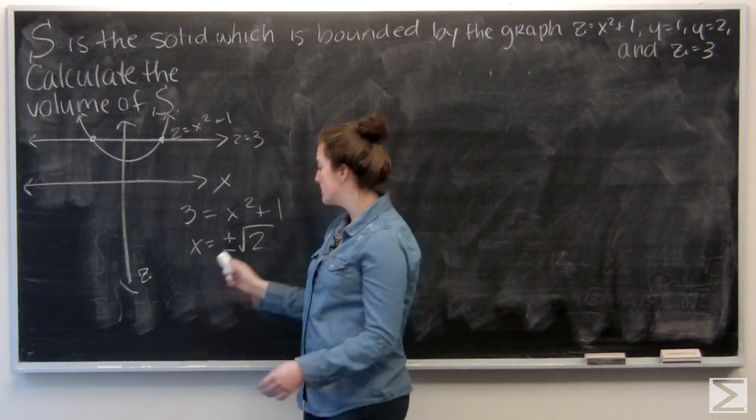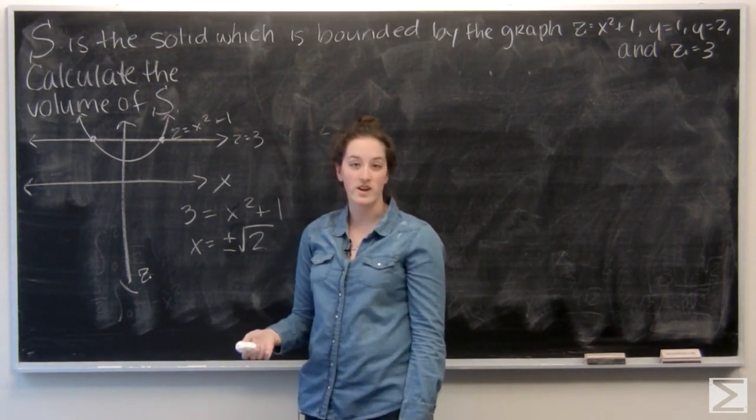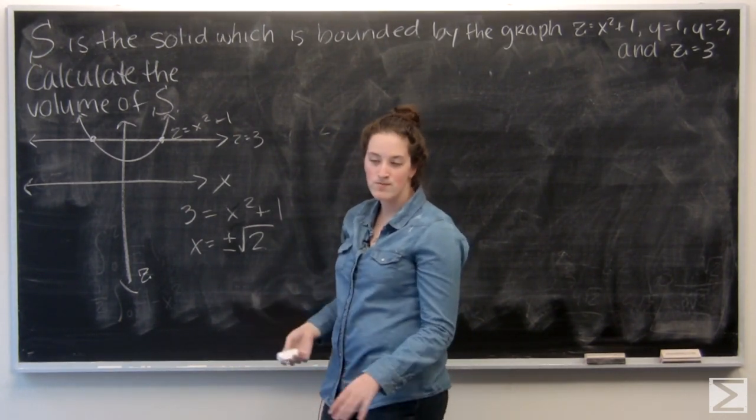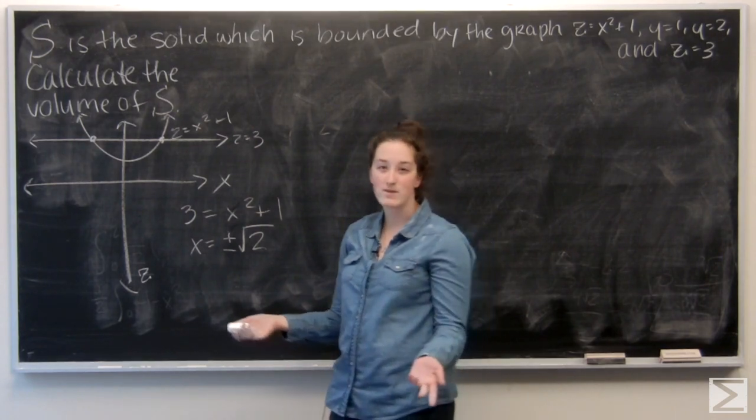So now I have x bounds, y bounds, and z bounds, so I'm ready to start integrating. I'm going to go ahead and put the x bounds on the outside, and then y. They're both constants, so it doesn't really matter which order I integrate in.